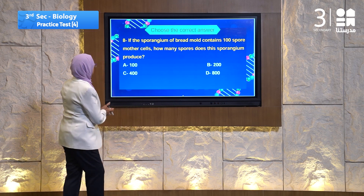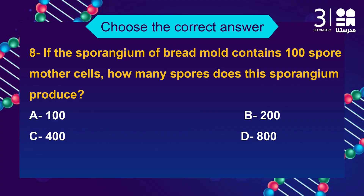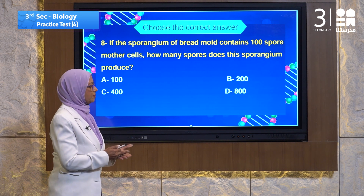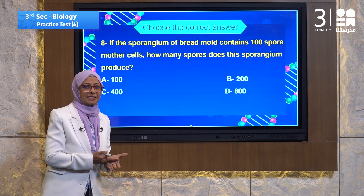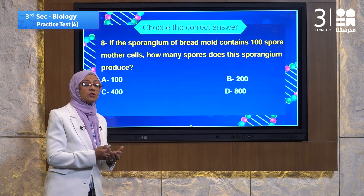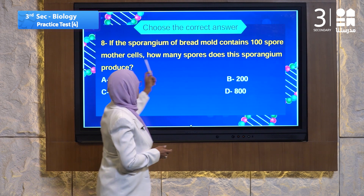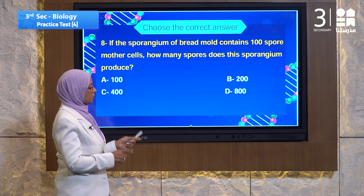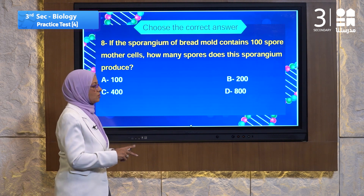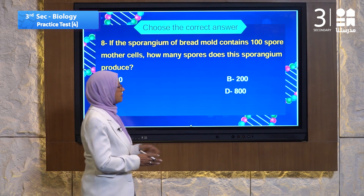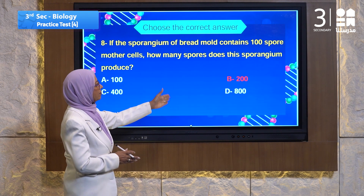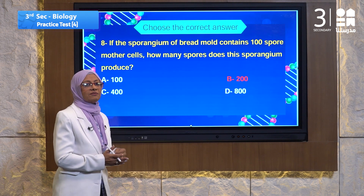Question number eight: if the sporangium of bread mold, which is a fungus, contains 100 spore mother cells, how many spores does the sporangium produce? The sporangium divides mitotically, and mitotic division produces two cells from one parent cell. So 100 spore mother cells times 2 equals 200 spores. The answer is 200.